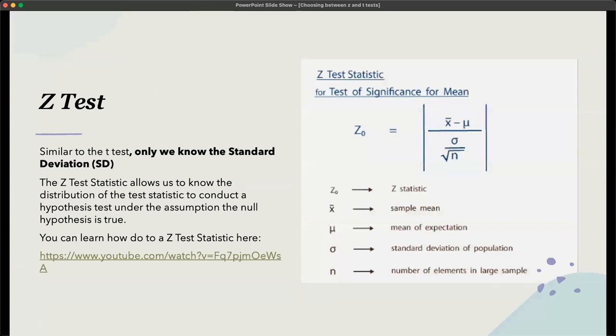So now we're going to look at the z-test. This is the equation for the z-test. Again, we used to do these by hand. I've included a link in this PowerPoint presentation on how to do this by hand, if you're interested. But again, this is when you only have one sample and you do not know the standard deviation. So the z-test statistic allows us to know the distribution of the test statistic to conduct a hypothesis test under the assumption that the null hypothesis is true.